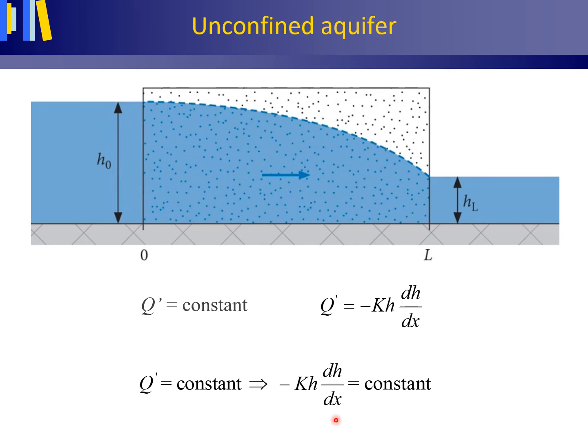As the hydraulic gradient is the slope of the tangent to the potentiometric surface in this cross-section, the distribution of the hydraulic head with distance x, the potentiometric surface, must have a convex shape.